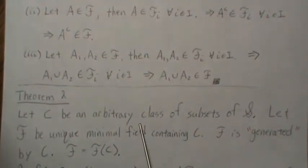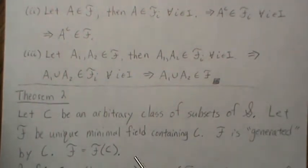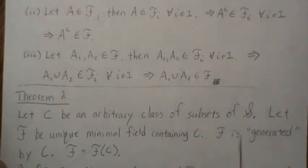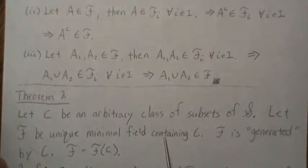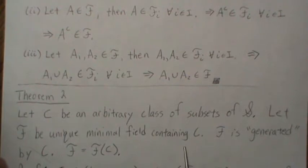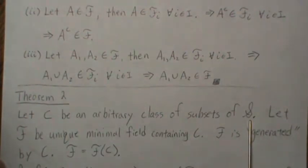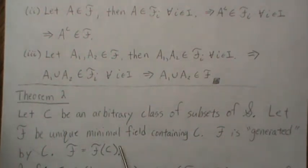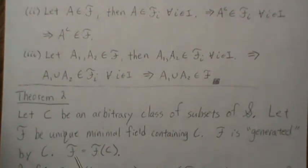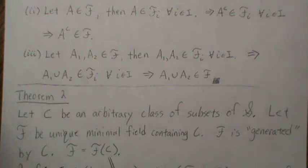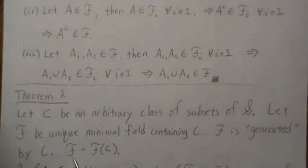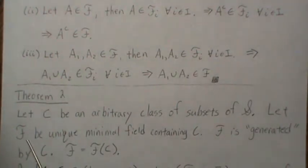Theorem two: let C be an arbitrary class of subsets of S. Then there exists a unique minimal field F containing C — that is, the smallest field generated by C. There can be many ways to create fields with subsets of our sample space, but there is a smallest one. We say F is generated by C.